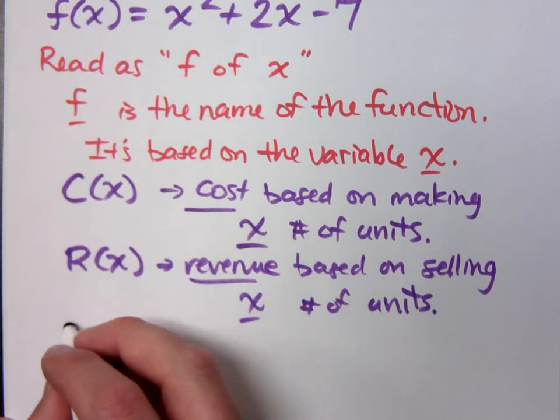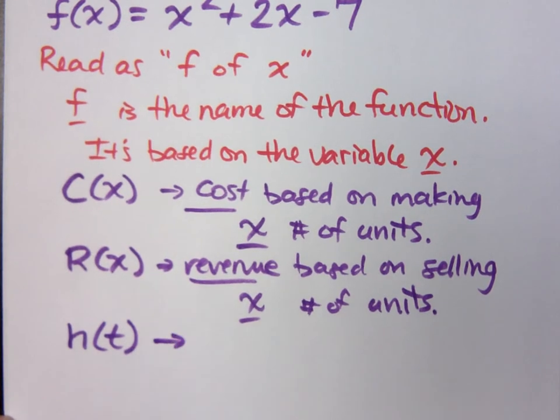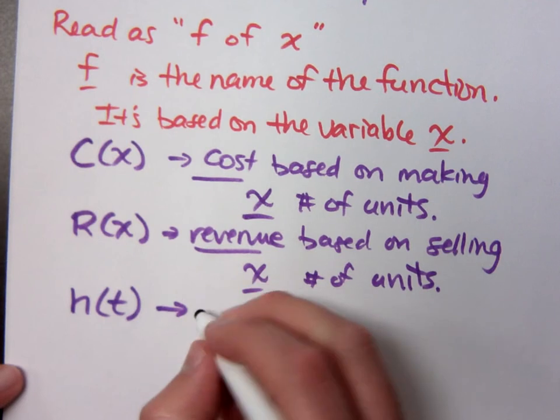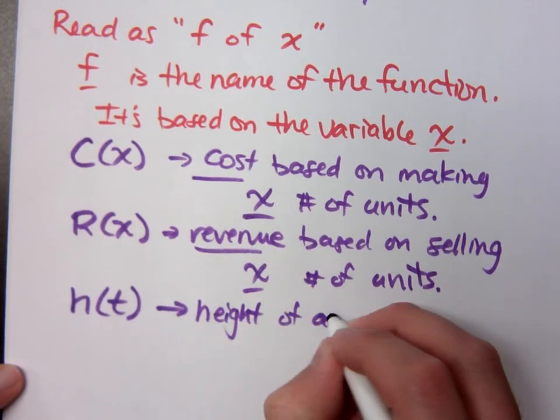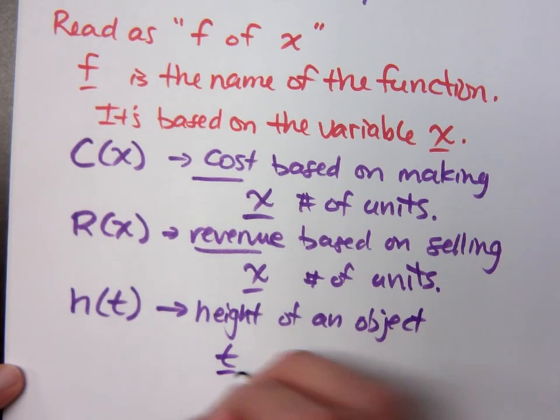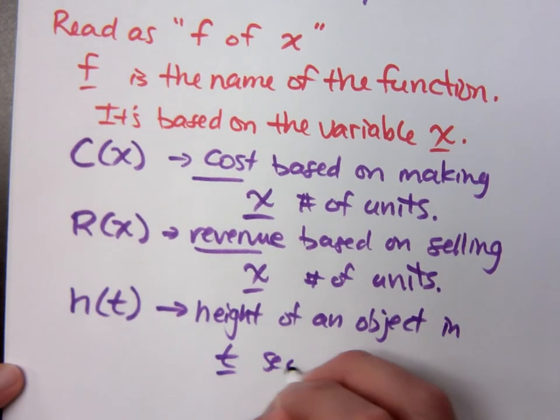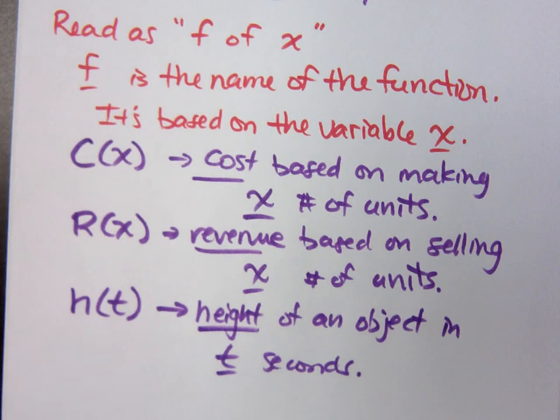Here's another one of my favorites. h of t. This is the height of an object given in t seconds after launch or dropping or whatever is going on. So we may change that up to give us more meaning instead of just always saying f of x.